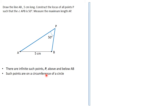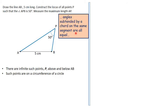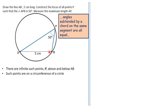This is where the knowledge of angle properties of a circle comes in. We normally say that angles subtended by a chord on the same segment are equal. Therefore AB acts like a chord and P lies on the circumference, so wherever P is placed on that arc, angle APB will be constant at 50°. The locus of P is therefore a circular arc.